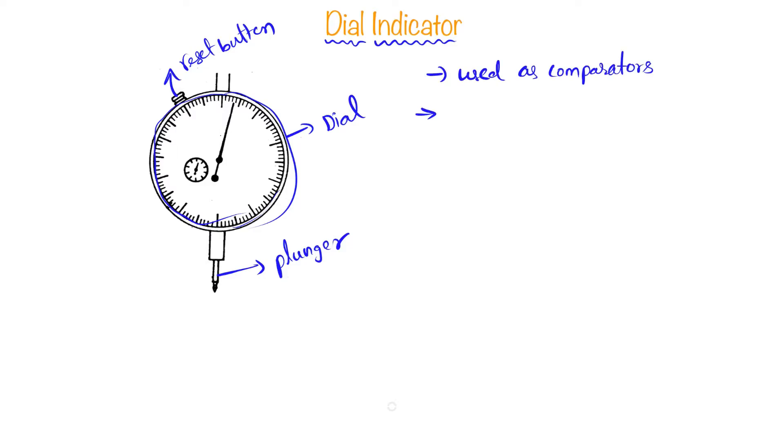What is a comparator? Comparators are precision measuring instruments used to compare the workpiece measurements with the standards. This dial indicator must be mounted on any other base or equipment.